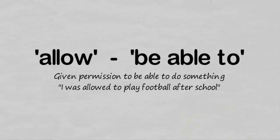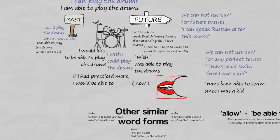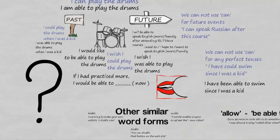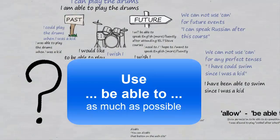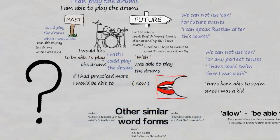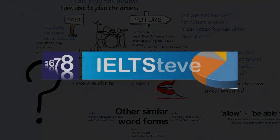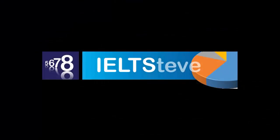So, a final question: what should you use — can, could, or able to? My advice: use able to as much as possible, unless you're talking about the past simple or the present. For any other tense, just get used to using able to. Hope you found that helpful. Have a look at some more of my videos on IELTS Steve to find out more about using language and writing in the IELTS test.